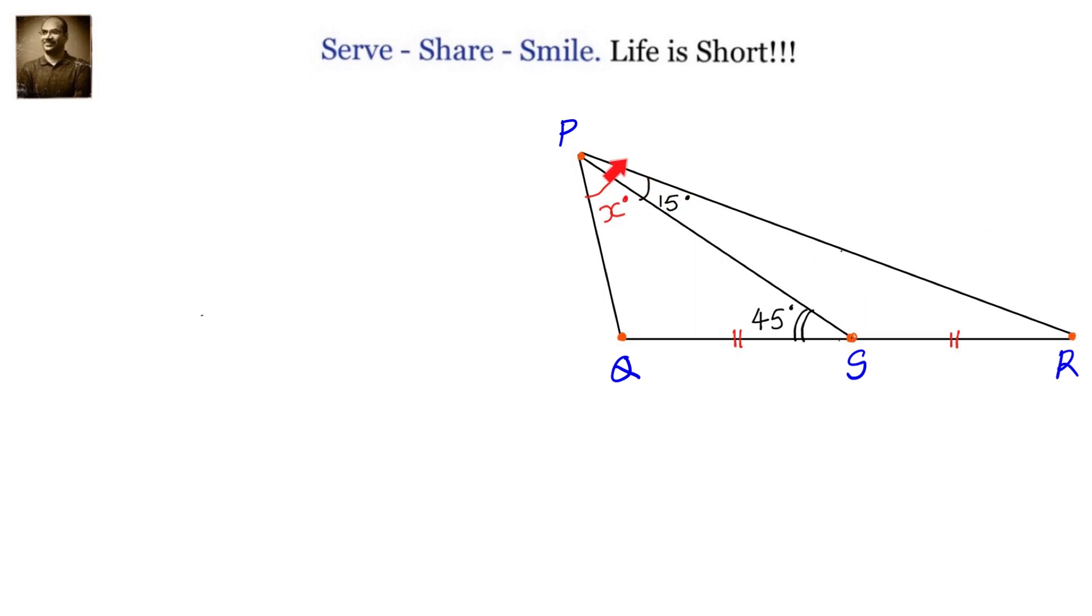PQR is a triangle in which S is the midpoint of QR. We have QS equals SR. Angle S is 45 degrees and angle SPR is 15 degrees. We have to calculate the value of angle QPS, that is X.